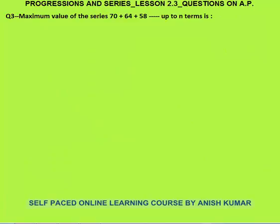Here is an interesting question about the maximum value of a series. The terms are decreasing, so somewhere down the line they will become negative. We don't include negative terms because we need the maximum value. Maximum value comes only by taking the positive terms. First term a is 70, and the common difference d is second term minus first term, which is minus 6.